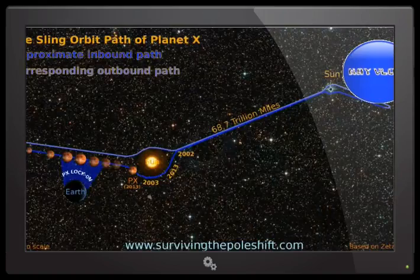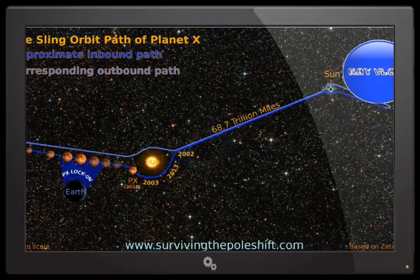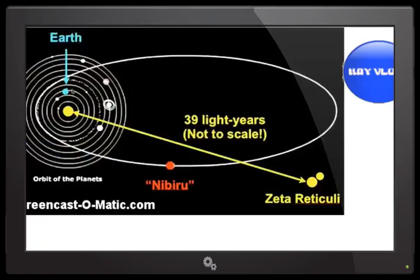Let's start with an overview of the orbit of Planet X. Now, this is wrong. Nibiru or Planet X does not orbit in an elliptical fashion. So this is a fallacy.